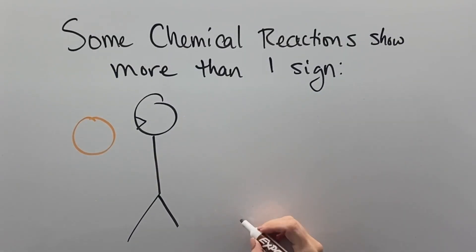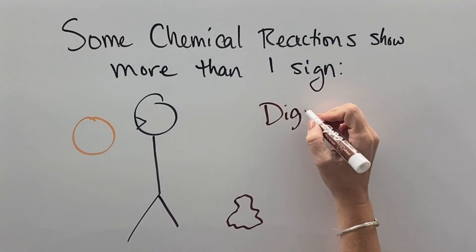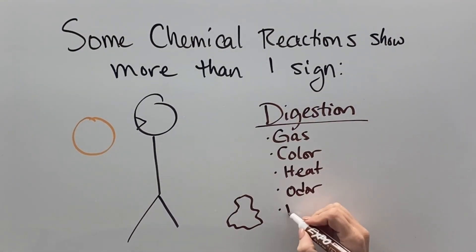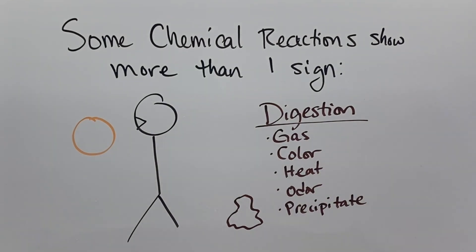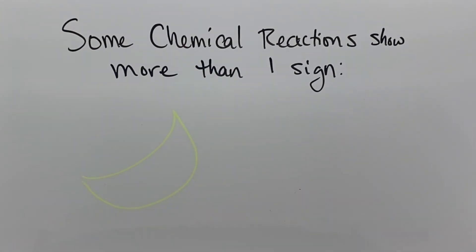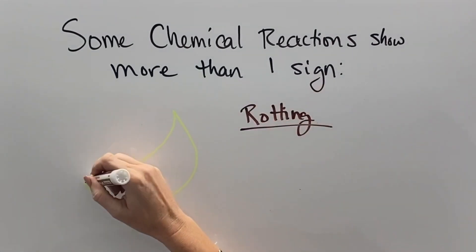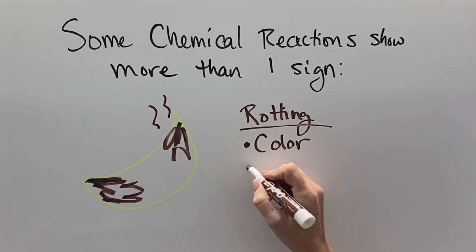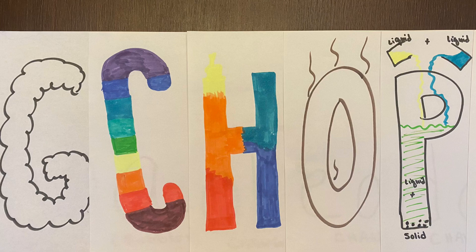Some chemical reactions have more than one sign at a time. For example, when we digest our food it sometimes comes out with a little bit of gas, a different color, a different temperature, a different smell, and precipitates can be formed — because babies have a liquid diet but still make solid poop. When food goes bad, the first sign is that it turns another color as it oxidizes in the air, but it usually also has a different odor, which is a sign that it's not the same chemical as before. Now you can keep a lookout for chemical reactions all around you by looking out for gas, color change, heat change, odor change, and precipitate formation.